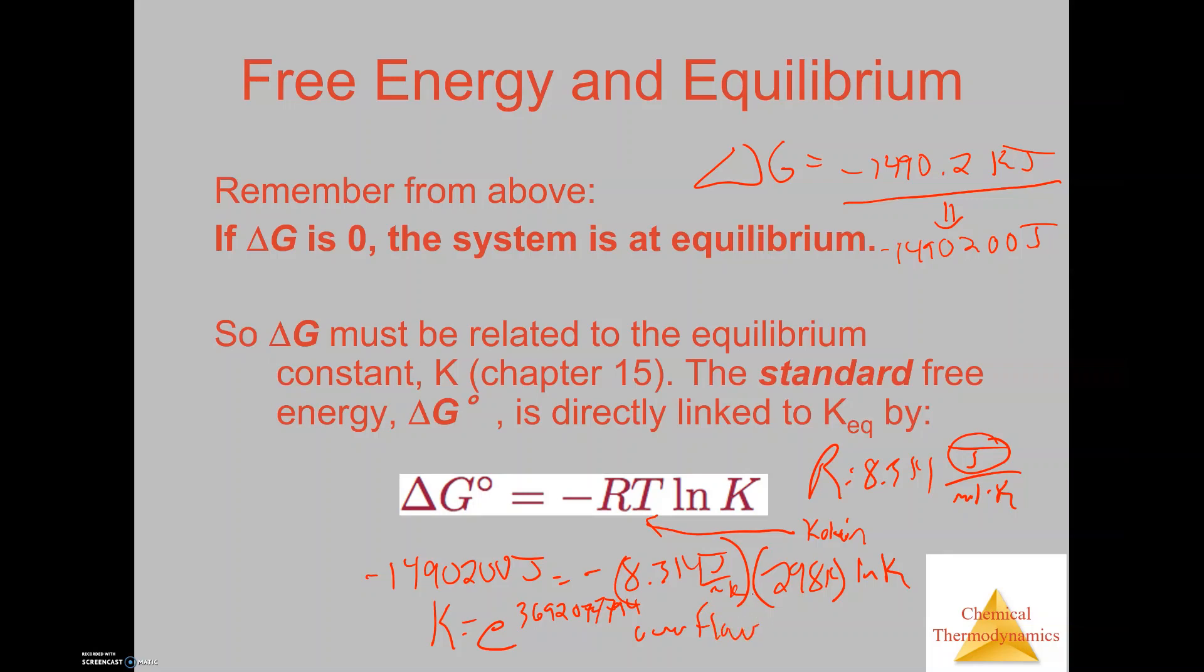That means the number is so large to the point where the calculator can't even compute it. That should make sense because the formation of rust is spontaneous—it's going to go to the right side. It's so spontaneous to the point where, in this case, the equilibrium constant is so large that the calculator cannot even compute it. That's not a problem. In our case, it's okay that our calculator can't calculate it.